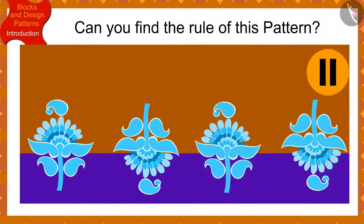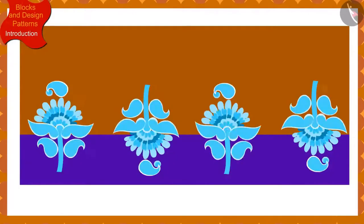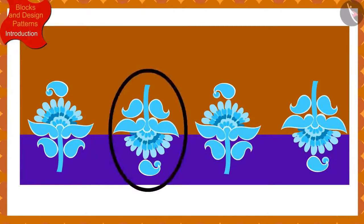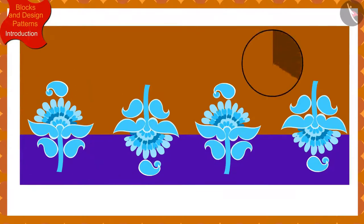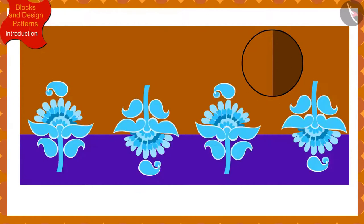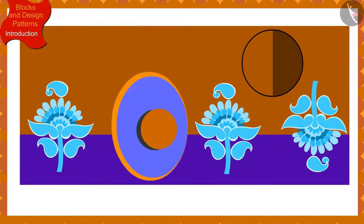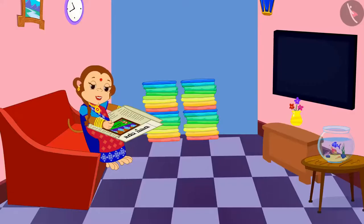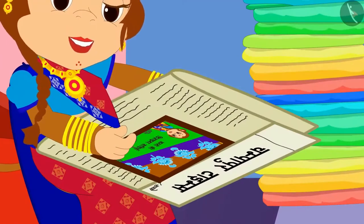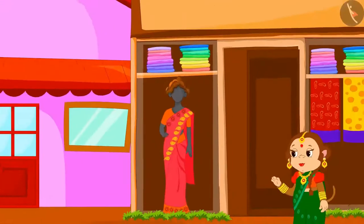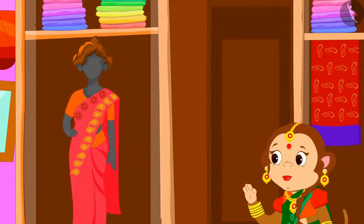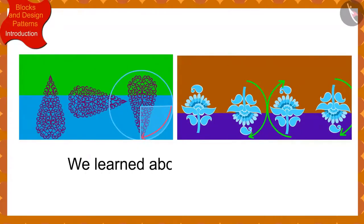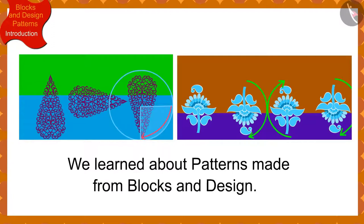Then what happened? Banno got orders to make a lot of saris the next day. Children, if Banno has made such a design on one of the saris, can you find the rule of this pattern? You may stop the video and think of the answer. If we look closely, we will find that this impression has been made by rotating the previous impression by half in the clockwise direction. To create this pattern, Banno rotated the block by half in the clockwise direction each time. Saris made by Banno became very famous throughout the village and Banno opened her own sari shop in a very short span of time. In this video we learned about patterns made from blocks and design. In the next video, we will learn more through some interesting examples.